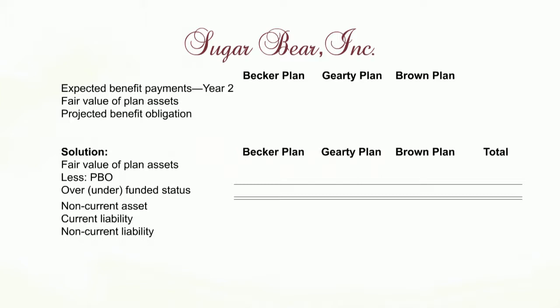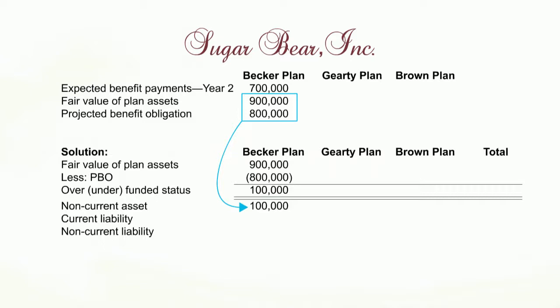Let's start with the Becker plan. The expected payouts in the next year are $700,000. The plan has assets of $900,000, so there's no short-term problem — no current problem. They can make the payments for next year. The projected benefit obligation is $800,000, so we have a plan with $900,000 against a liability of $800,000. We're overfunded, and we always treat an overfunded plan as a non-current asset. So that would go into the non-current asset bucket.